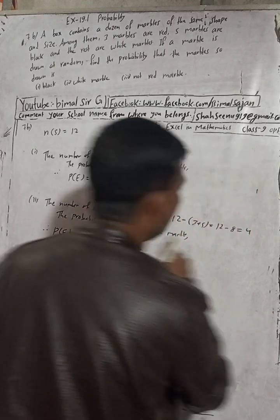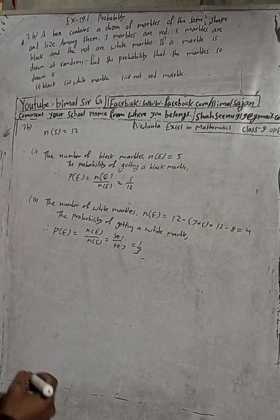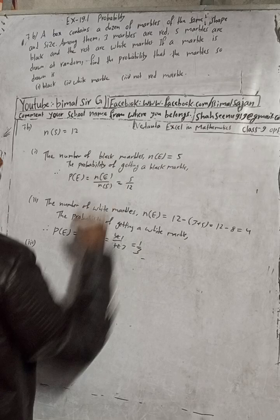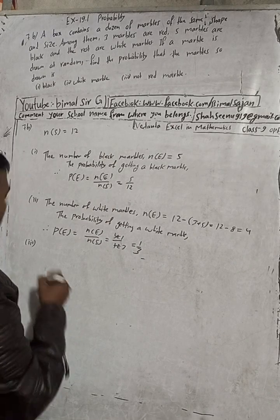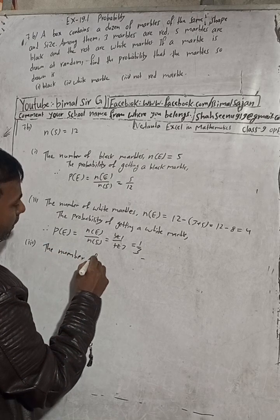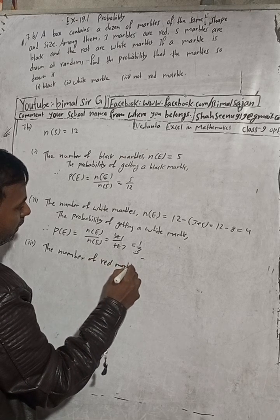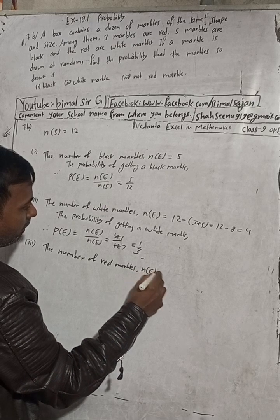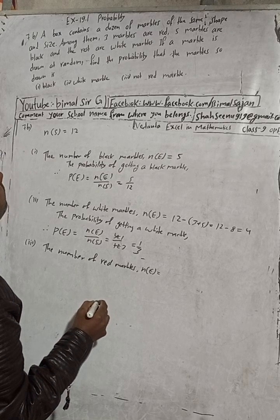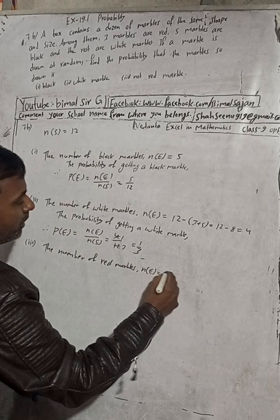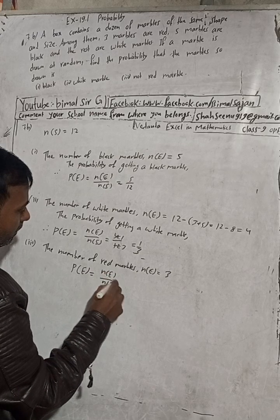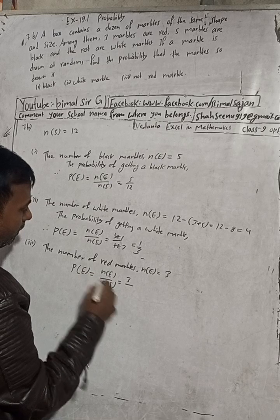Now part three: not red marble. First we find the number of red marbles. The number of red marbles is three. Therefore, the probability of getting a red marble P(E) = n(E) / n(S) = 3/12 = 1/4.